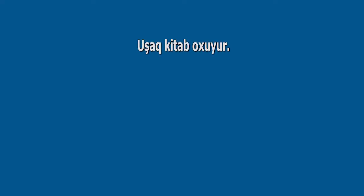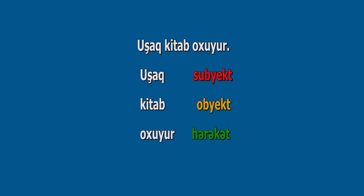Məsələn: Uşaq kitab oxuyur. Uşaq subyekt, kitab obyekt, oxuyur hərəkəti bildirir. Hərəkət adətən müxtəlif şəkildə icra oluna bilər. Hərəkəti icra etmək üçün subyekt və obyekt olur. Subyekt hərəkəti icra edən, obyekt hərəkət üzərində icra olunandır. Hərəkəti icra etmək baxımından feylin müxtəlif qramatik məna növləri olur.